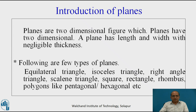A plane is nothing but a two-dimensional figure. Planes have two dimensions — one as length and the other as width — with negligible thickness. Following are a few types of planes. First is the triangular type, which includes equilateral triangle, isosceles triangle, right angle triangle, and scalene triangle. Other figures are polygons such as square, pentagonal, hexagonal, octagonal, etc. Apart from this, we have the rectangle, rhombus, trapezoid, circle, and ellipse. There are also irregular planes, but our study focuses on triangular, square, polygon, rectangle, rhombus, etc.